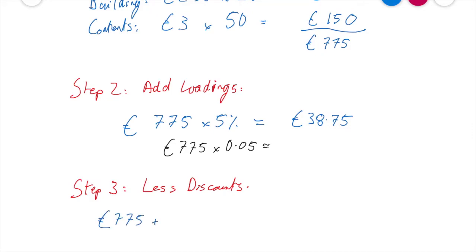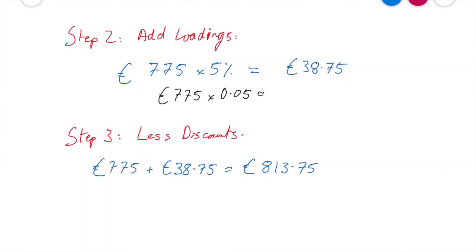So 775 plus my 38.75, that's going to give me a total of 813 euros and 75 cent. Excellent. So that is the figure I'm going to work off there for applying my discount. So it's not only my premium, it's my premium plus my loading that I have to apply for my discount. So now, just like we did before, I'm going to get 6% of my 813.75, the 6% I got in the question. Again, get your 6% in whatever way you're happy with, and that's going to give me a total of 48.83.